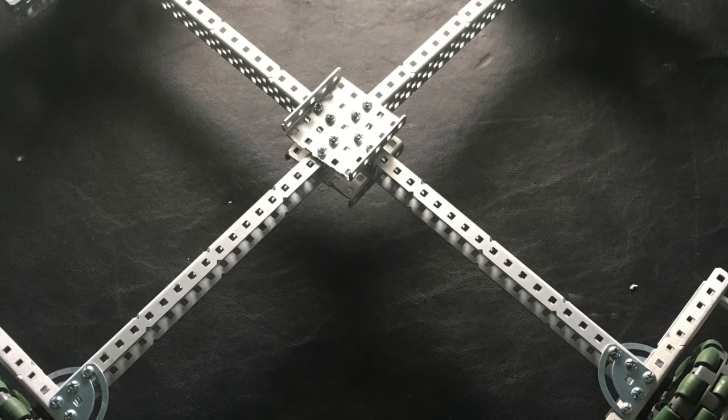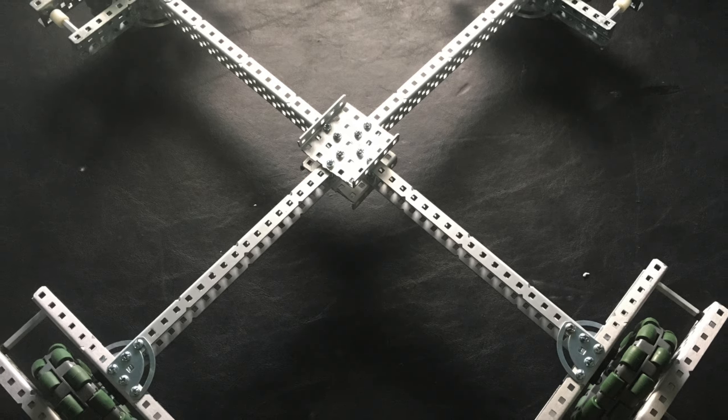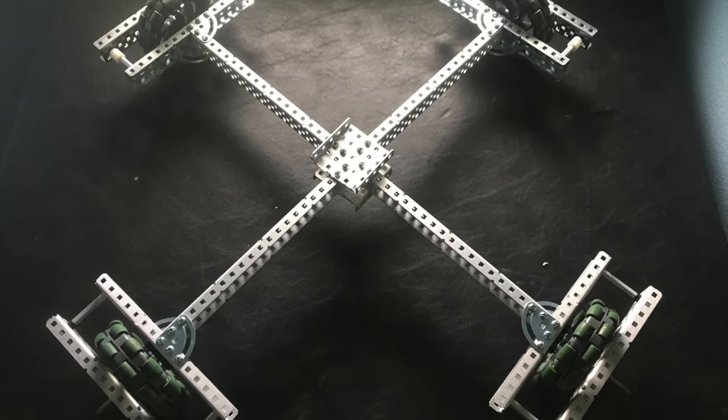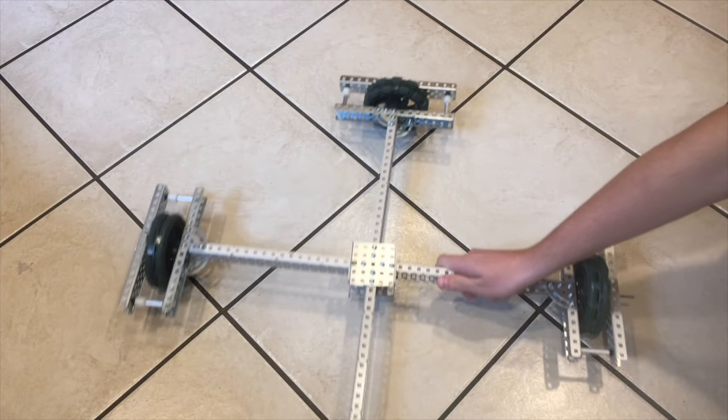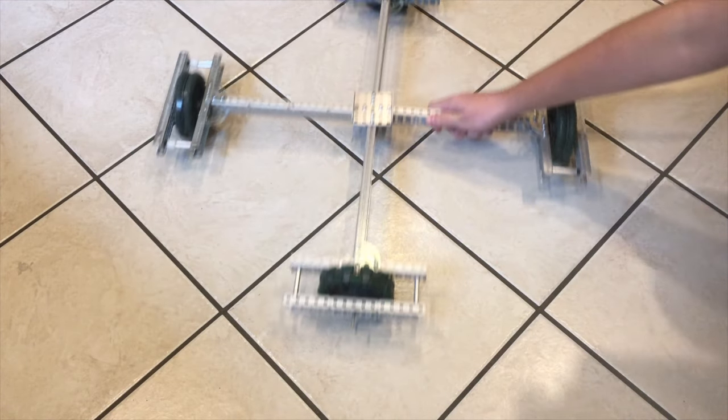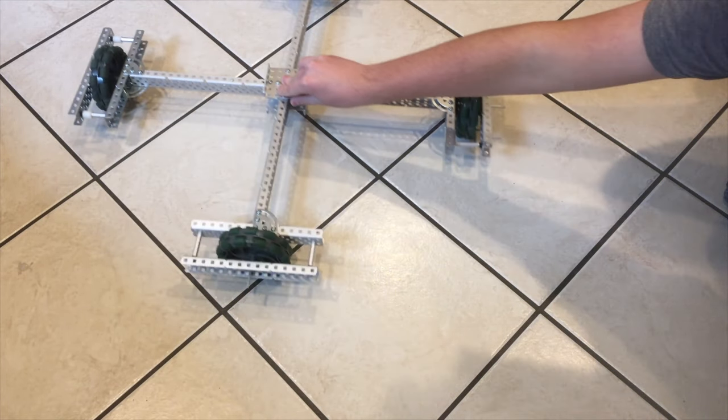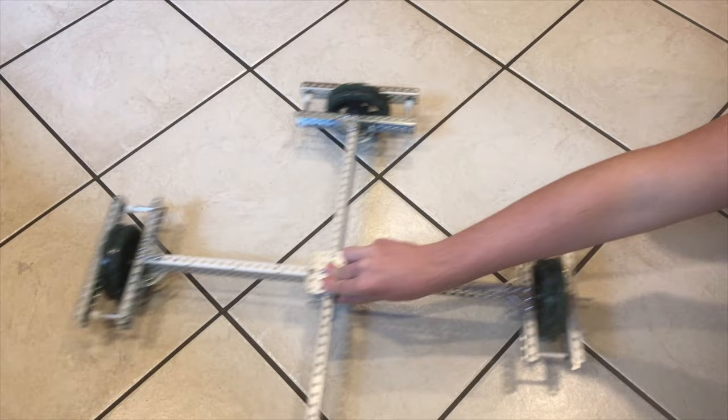Finally, we come to the lord of all Omni wheel setups, the holonomic drive, commonly referred to as the X drive. This setup features four Omni wheels arranged at right angles to each other. The example shown here is nowhere close to the size restrictions of VRC and isn't a particularly secure example, but was mocked up rather quickly to show the range of motion for one of these setups.